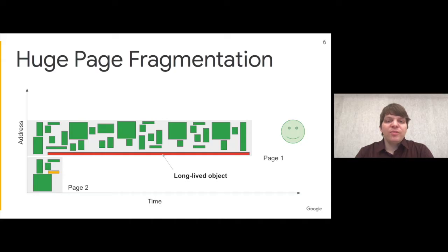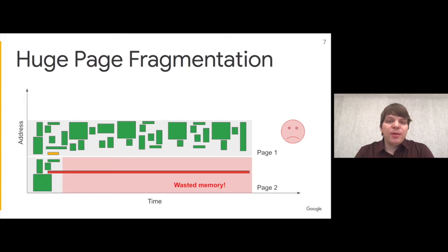However, what if the memory allocator places a long-lived object on a page that's otherwise entirely free? In this case, this entire page needs to remain assigned to the application and can't be returned to the OS. This means we waste about half of our memory to fragmentation.